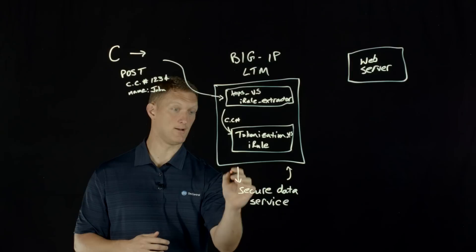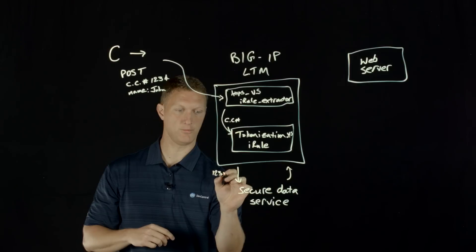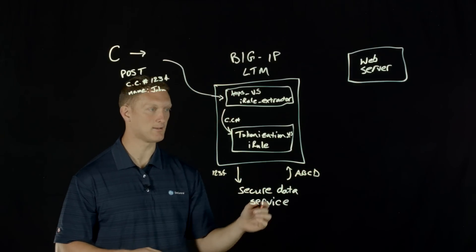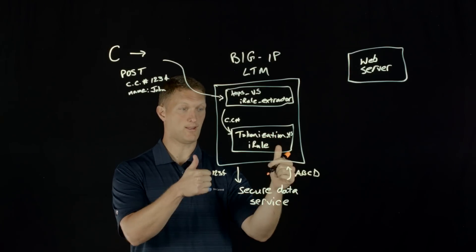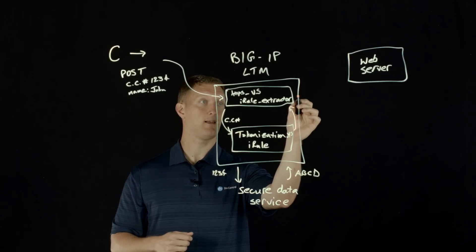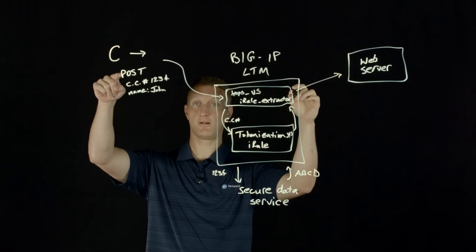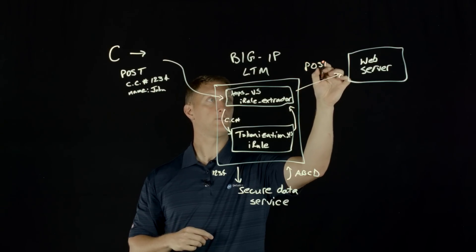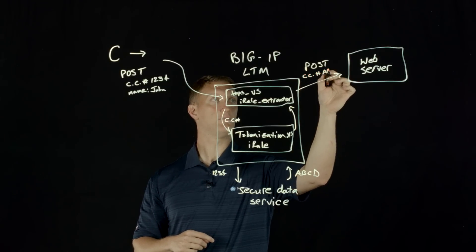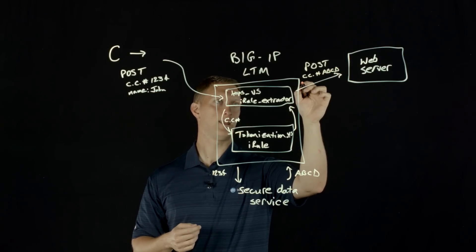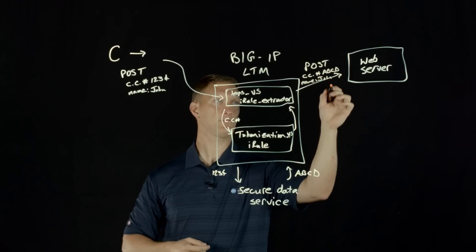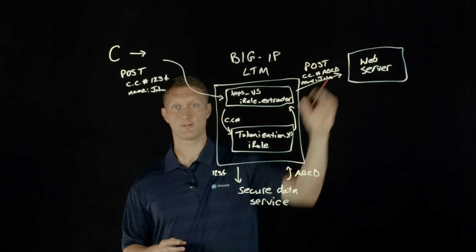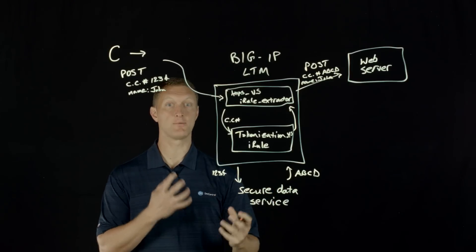The secure data service sends back the encrypted credit card number. So the credit card number that was originally '1234' is now something like 'abcd' — whatever the encrypted form is. This gets passed back up to the first virtual server, which then reassembles the POST — now it reads something like CC number 'abcd', and the name is still 'John' since that's less sensitive. That reassembled POST is sent on to your web server.